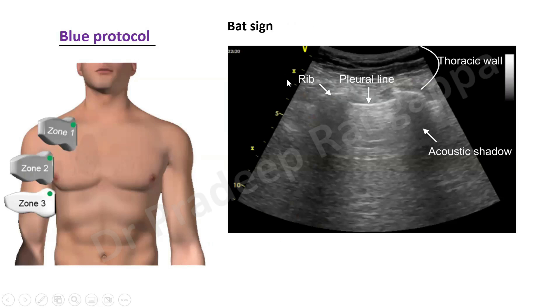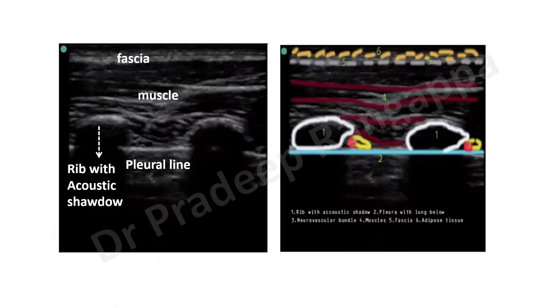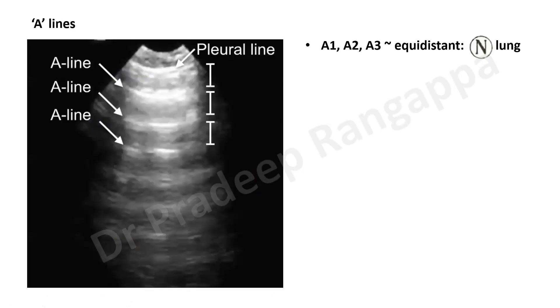When you put a probe, you would see something called the bat sign. It looks like: you have a pleural line, and the rib shadows on either side — giving it the appearance of a bat. You look for the pleural line, the rib with acoustic shadow, the muscle, the fascia, and the neurovascular bundles. The rib shadow and plural line are the key features. This is the first visualization you do at the first lung point.